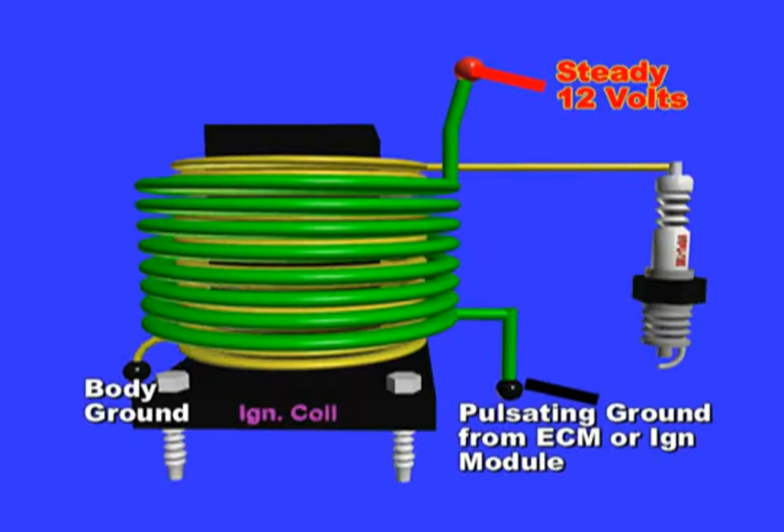The coil is composed of the primary and secondary circuits. The primary circuit has two terminals and is connected to steady battery voltage and to the ignition module or ECM. The relay or the ignition switch provides steady power to one side at all times.